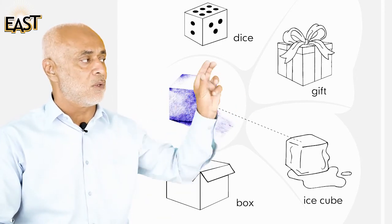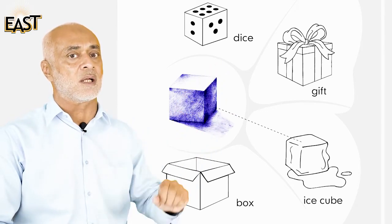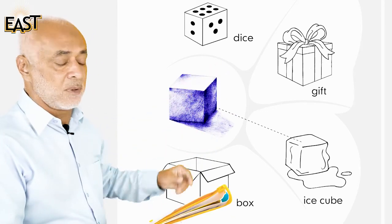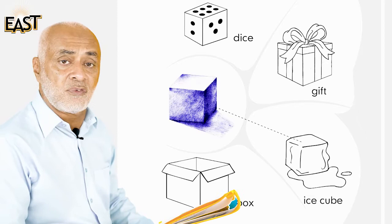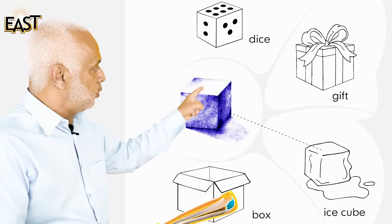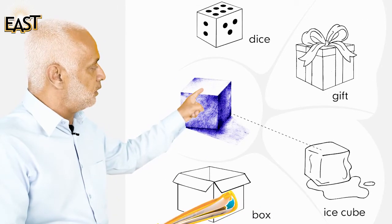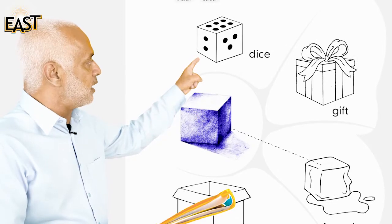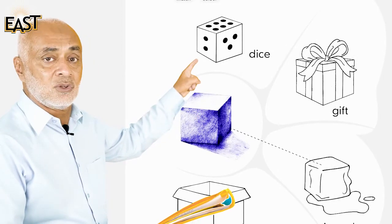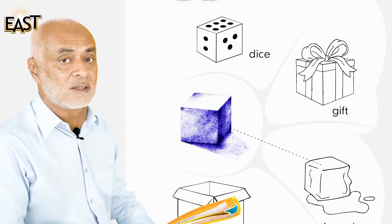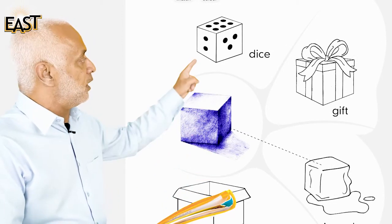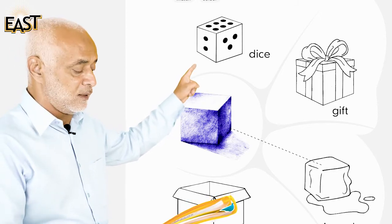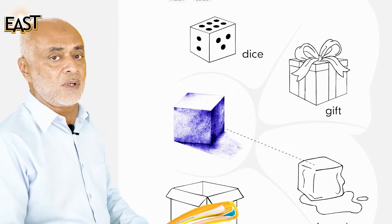We have some examples of a cube. This is a cube, this is a cube. And look — a dice! Jo aap ludo khelte hain, a dice is a cube. A dice is a cube, right?